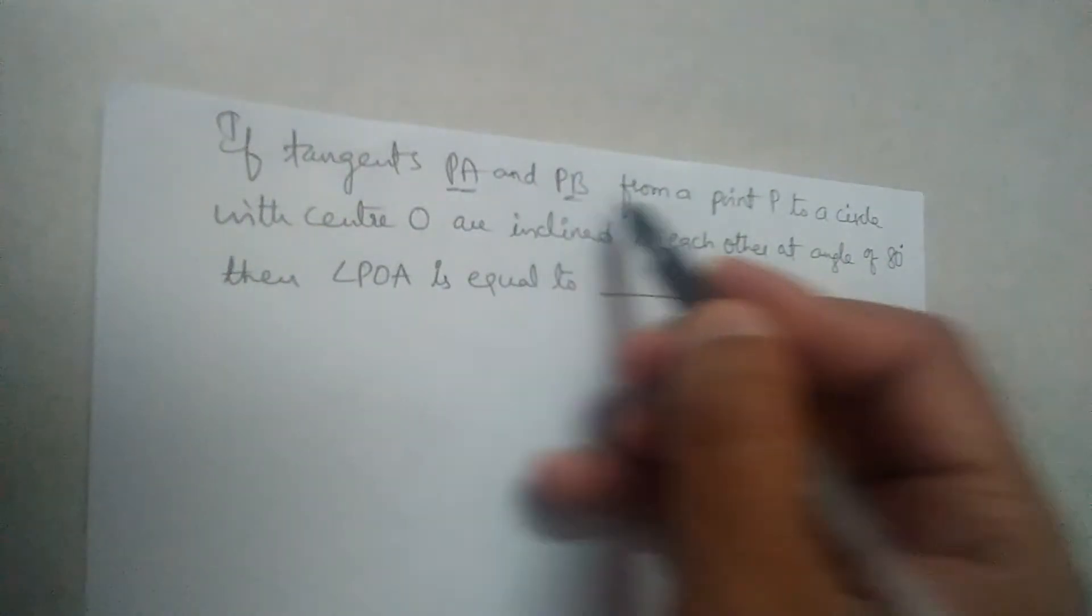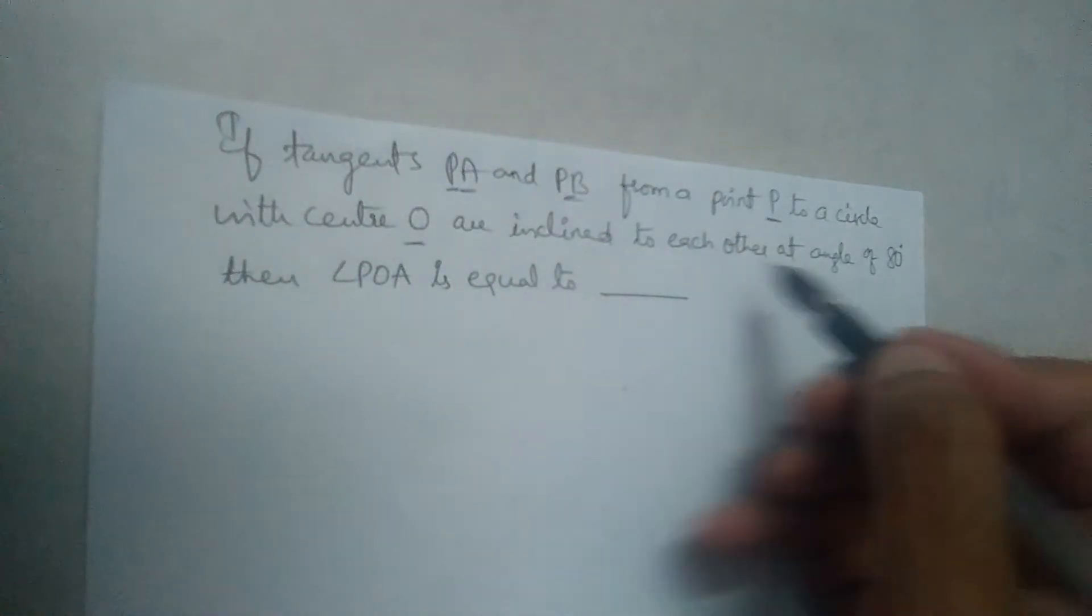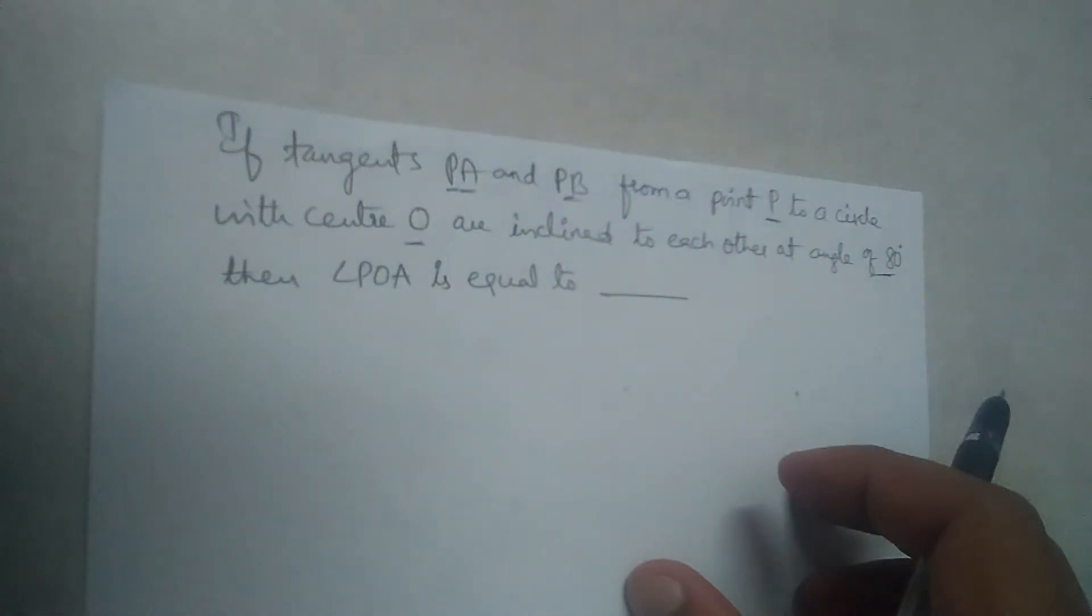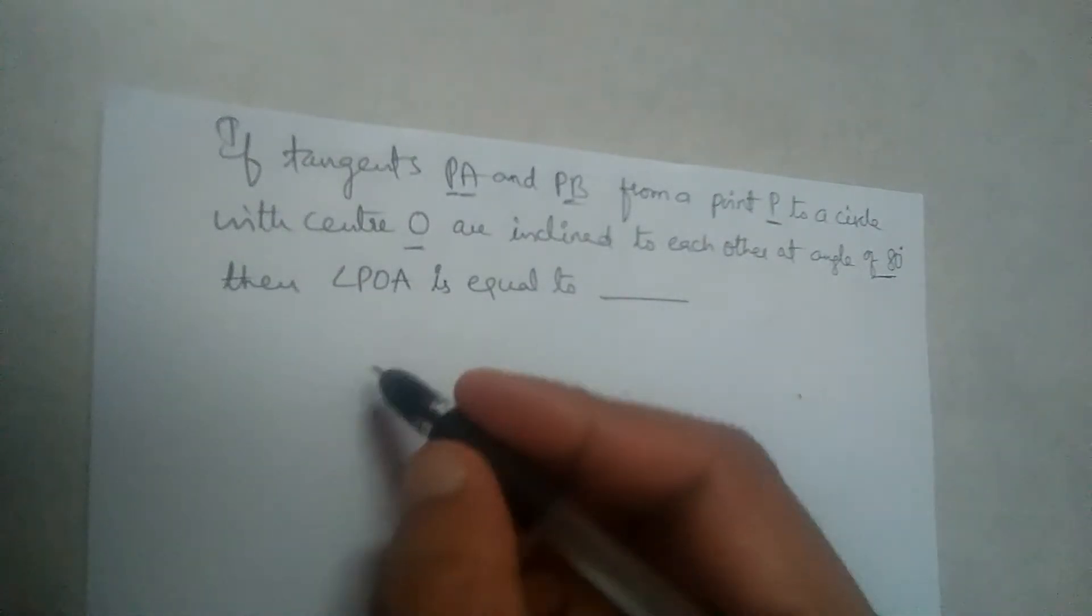If tangents PA and PB from a point P to a circle with center O are inclined to each other at an angle of 80 degrees, find angle POA. So then POA is equal to dash.